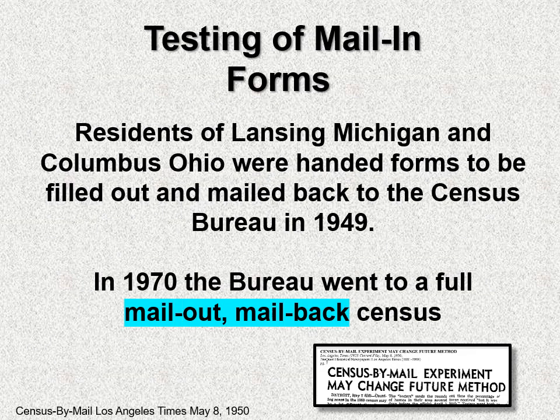They conducted tests before running the census — tests of questions and different question formats. One interesting 1939 test in Lansing, Michigan, and Columbus, Ohio, gave census forms to people to fill in and mail back with no enumerators. The Census Bureau had such success that in 1970 they went to a full mail-out, mail-back census. So the 1950 census was important for shaping future censuses.